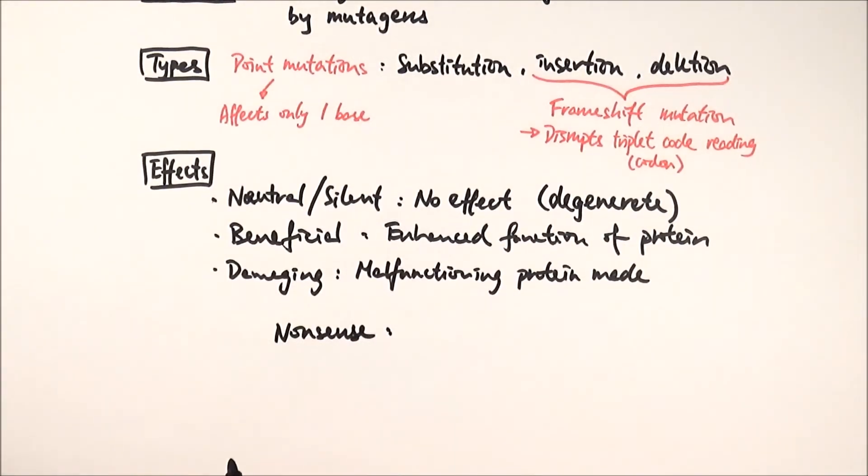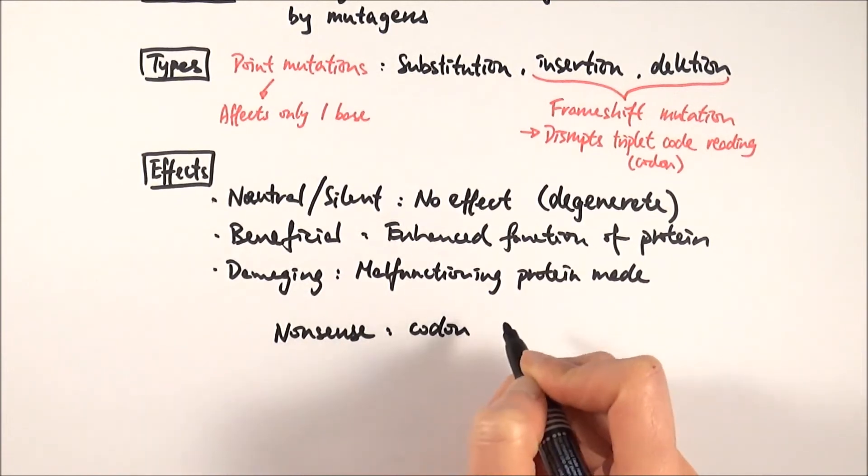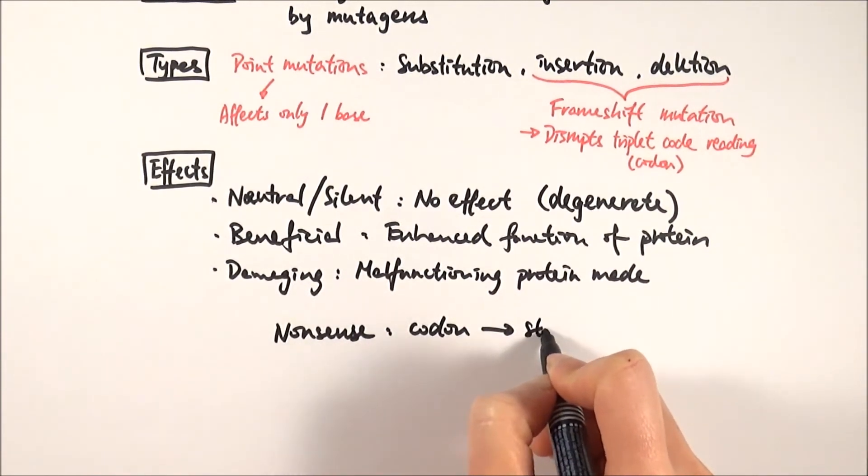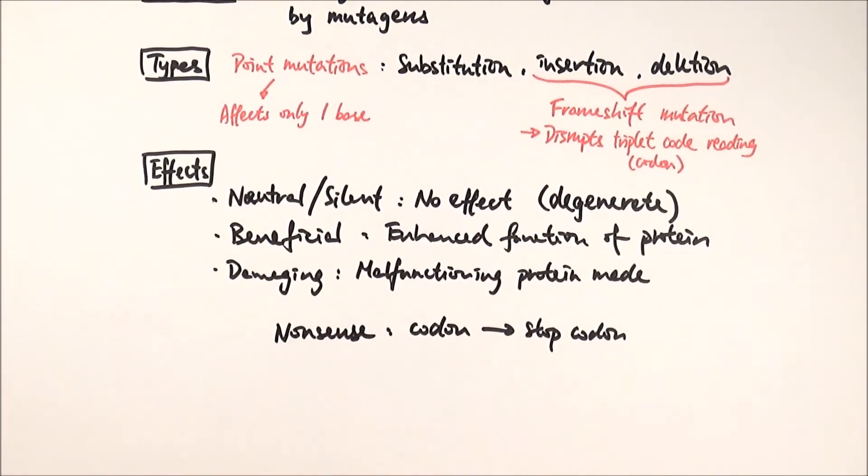The first one is called nonsense. What that means is that a codon, due to a particular mutation, has changed into a stop codon. That means that the protein you made has now got a premature end. So it's a shorter protein than expected and it wouldn't work.